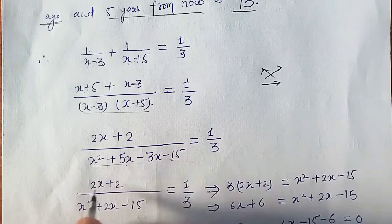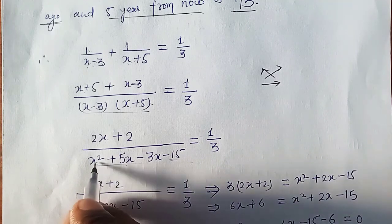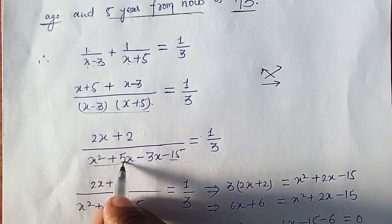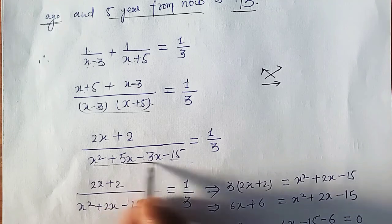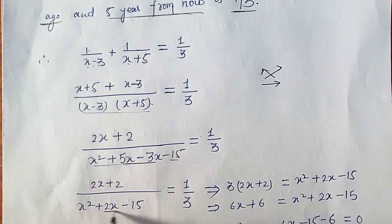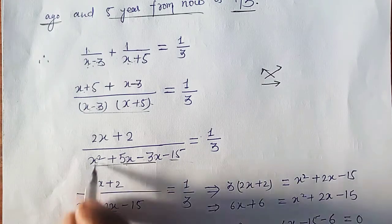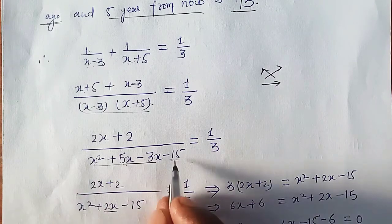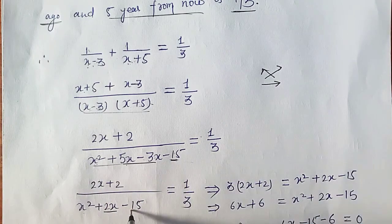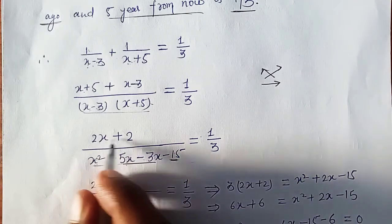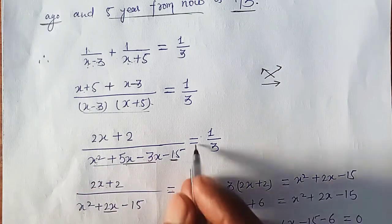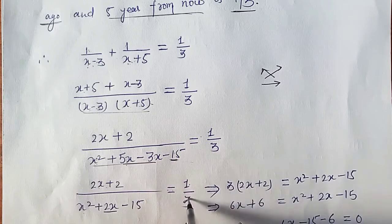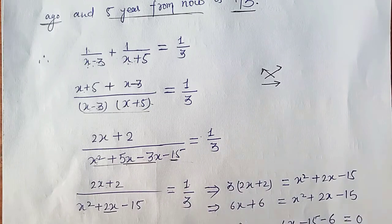When you rearrange, 5x minus 3x gives 2x, so we write x squared plus 2x minus 15 in the denominator and 2x plus 2 in the numerator, equal to 1/3.